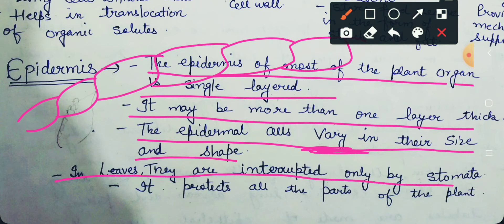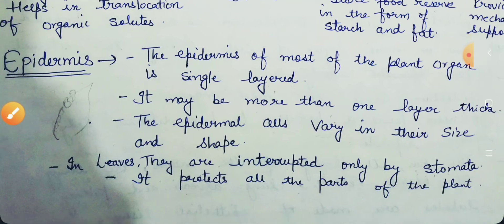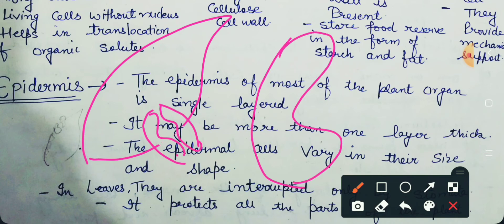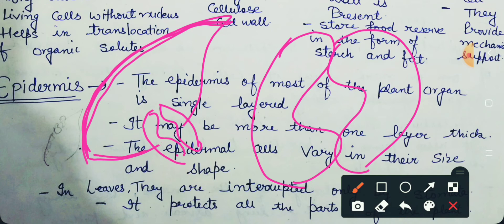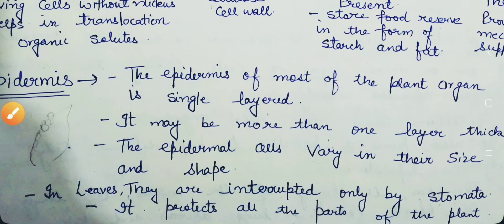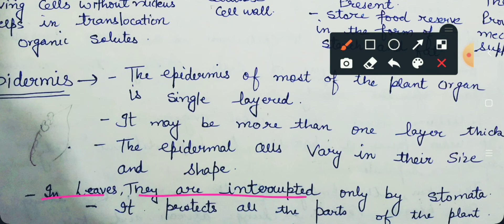In leaves, the epidermis is interrupted only by the stomata. In the leaf surface — this is a leaf — in some areas there are structures called stomata. The lower surface of a leaf has stomata on the upper epidermis layer. That is why in the leaves, the epidermis layer is interrupted only by the stomata.